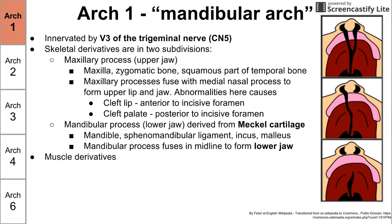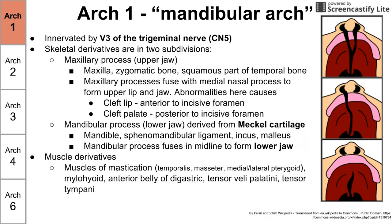Muscle derivatives from arch one include the muscles of mastication: the temporalis, the masseter, and the medial and lateral pterygoid muscles. Other muscles derived from arch one include the mylohyoid, the anterior belly of the digastric, the tensor veli palatini, and the tensor tympani. Finally, aortic arch one becomes part of the maxillary artery.